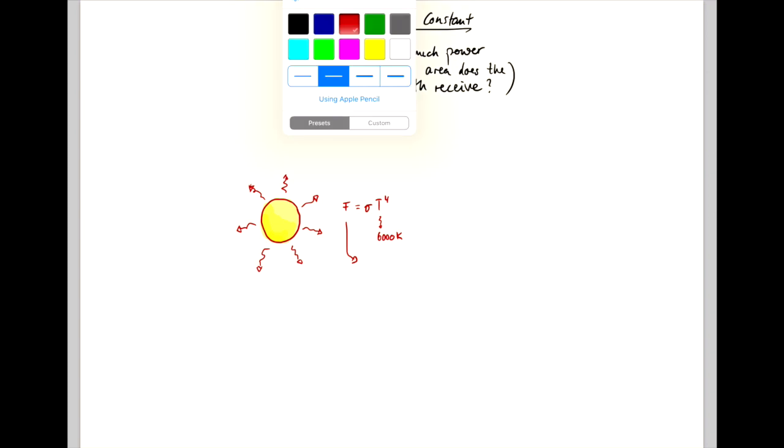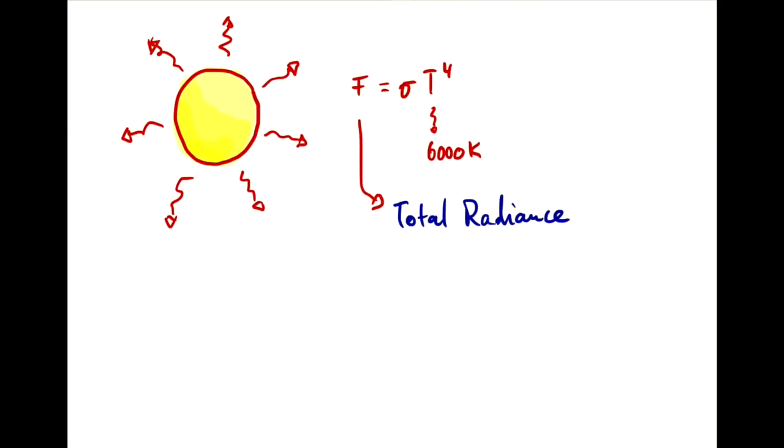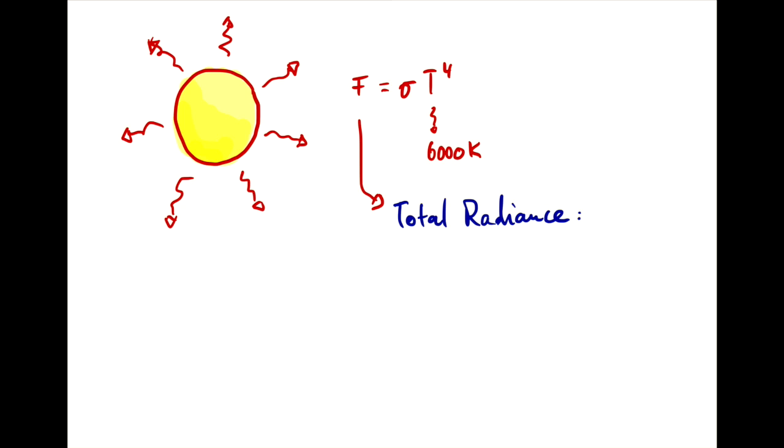So the total radiance, let's call it R, R of the Sun is sigma T to the 4 times the surface area of the Sun, A_s.